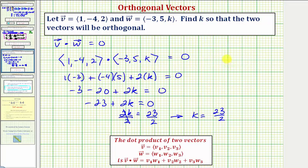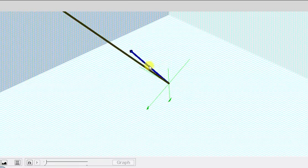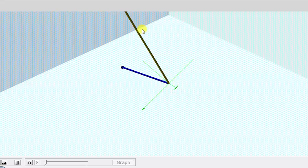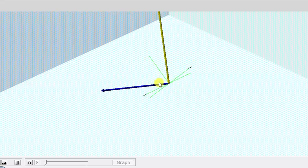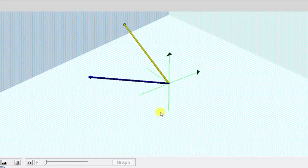When the z component of vector w equals 23/2, the dot product equals zero, meaning the two vectors are orthogonal. If we graph the vectors, it looks like this. The blue vector is v, and the yellow vector is w. We can see these two vectors are orthogonal. I hope you found this helpful.